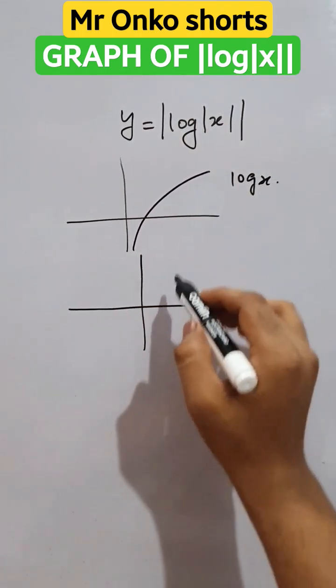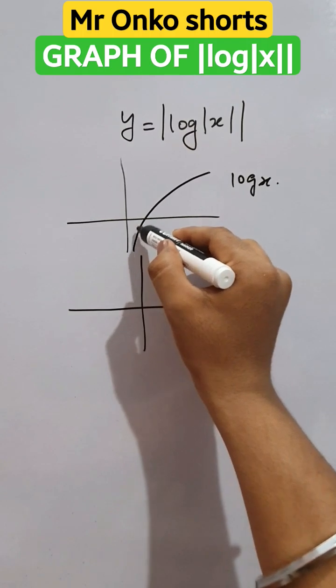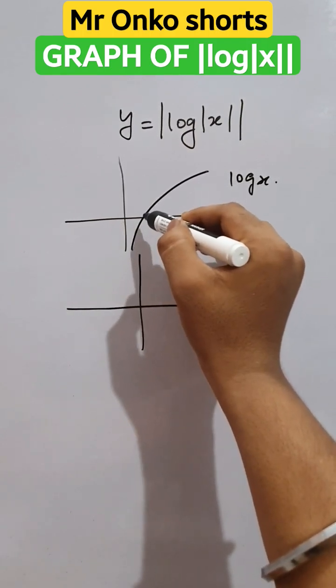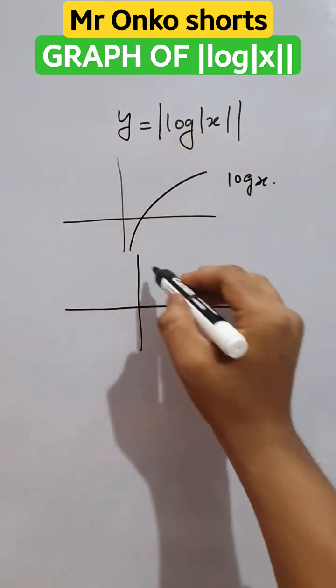So mod of log x, it means we have to eliminate this part in the negative zone of y and then we have to make it in the reflection of positive zone.